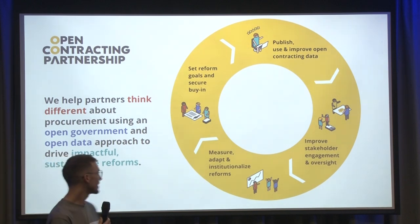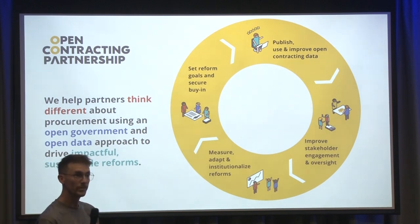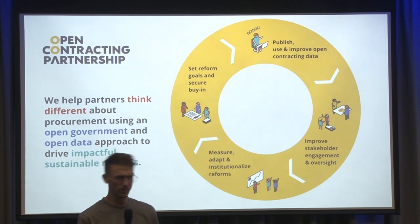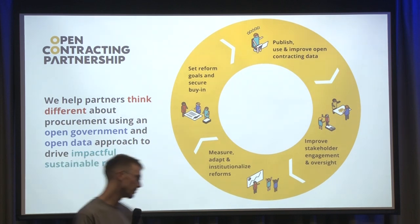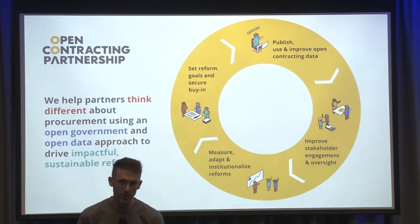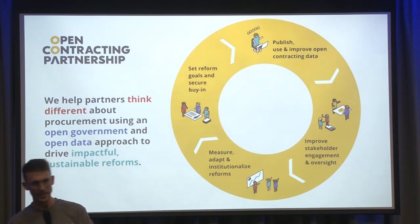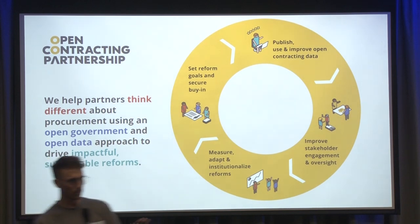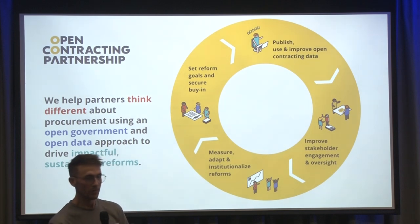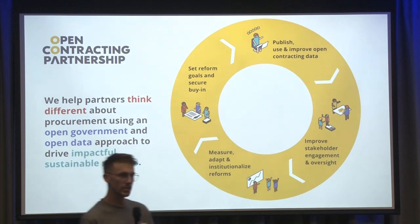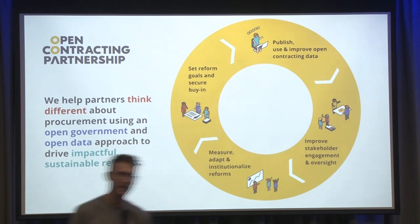Open Contracting Partnership is an NGO where we collaborate with partners around the world — governments mostly — on implementing open government and open data strategies to transform public procurement, meaning to make it more efficient, more inclusive, and sustainable.